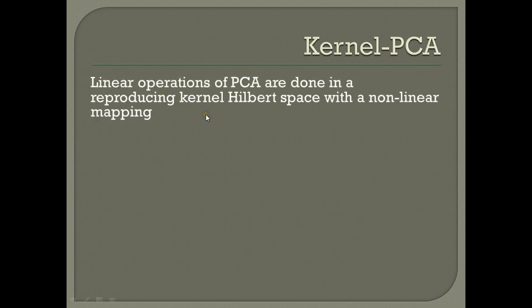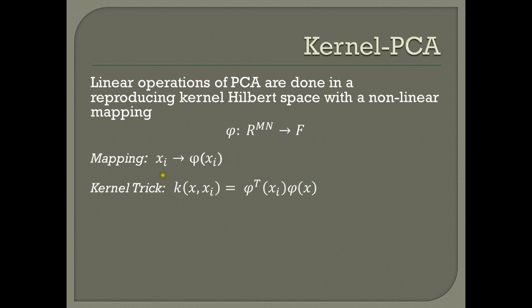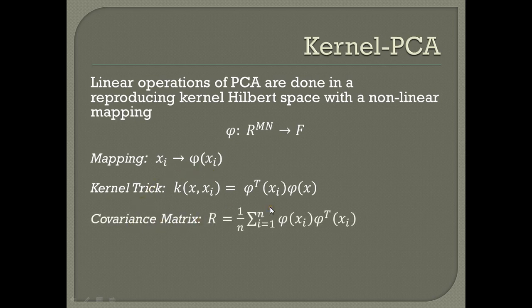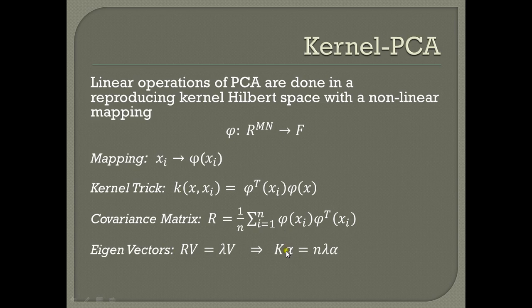Kernel PCA is a non-linear version of PCA which involves mapping of linear vectors onto a higher dimensional space known as the kernel Hilbert space through a non-linear mapping. The function phi represents the mapping from the linear space to the feature space. We do not actually calculate the feature vector for each input vector. Instead, we use the kernel trick, where the dot product of two vectors in the feature space is represented by a kernel function. To calculate the covariance matrix, we use the kernel trick and calculate the eigenvectors of the K matrix to extract the principal components.